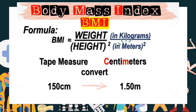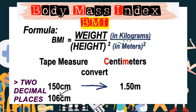Another example: 106 centimeters. Using the same procedure, the farthest right digit is 6. Counting two decimal places to the left, the decimal point falls between 1 and 0. So 106 centimeters becomes 1.06 meters.